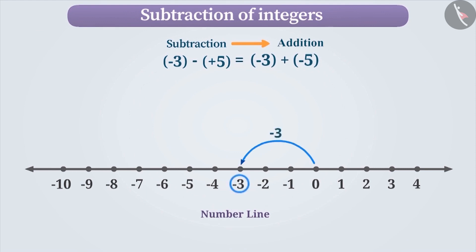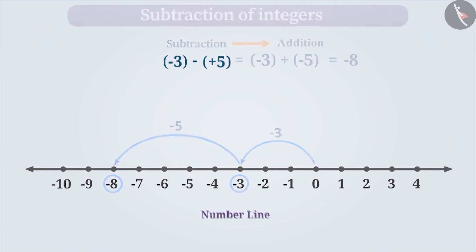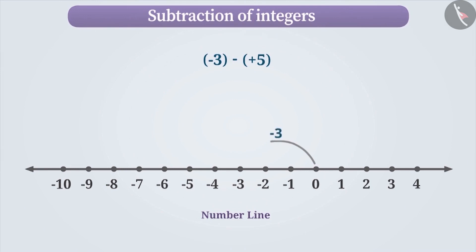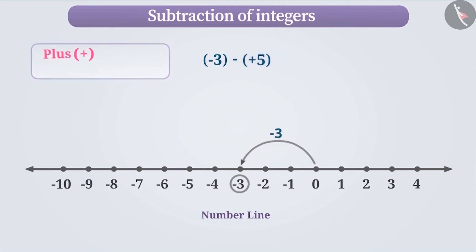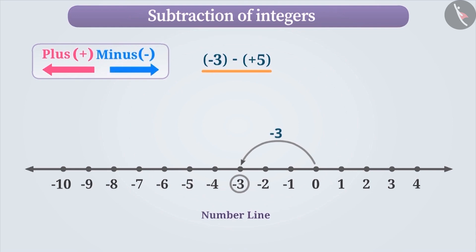In order to find the subtraction of integers on a number line, first convert subtraction into addition. We later add the numbers to obtain the result. We can also do the subtraction on a number line without conversion. To do this, we find the location of the first integer. While subtracting two integers on a number line, if the sign of the second integer is positive, then we will move towards the left side of the first integer. And if the sign is negative, then we move towards the right side of the first integer. In order to subtract, mark minus 3 on the number line, which is 3 steps towards the left of 0. Now, since we need to subtract the positive integer plus 5, we move 5 steps towards the left side of minus 3, thus reaching minus 8.